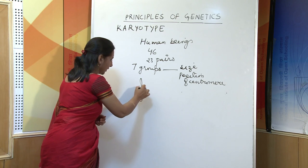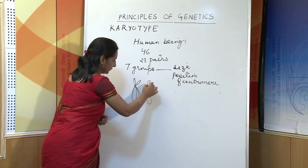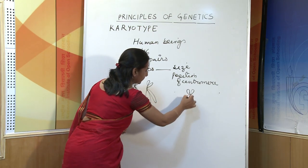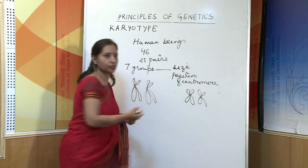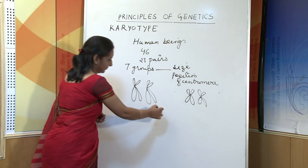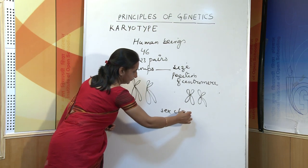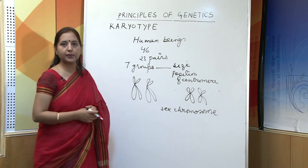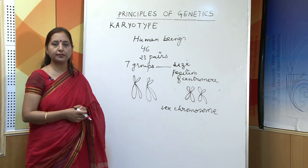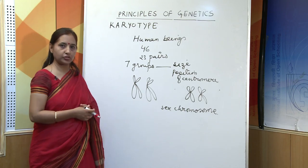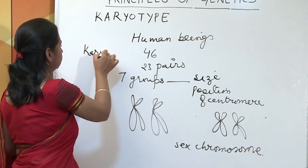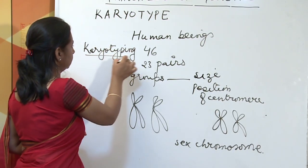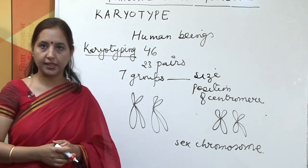Accordingly, these chromosomes are arranged from the biggest size to the smallest size, and the sex chromosome is kept at the last. When this type of arrangement is done, it is called karyotype, and this process is called karyotyping. The next topic is genetic disorders.